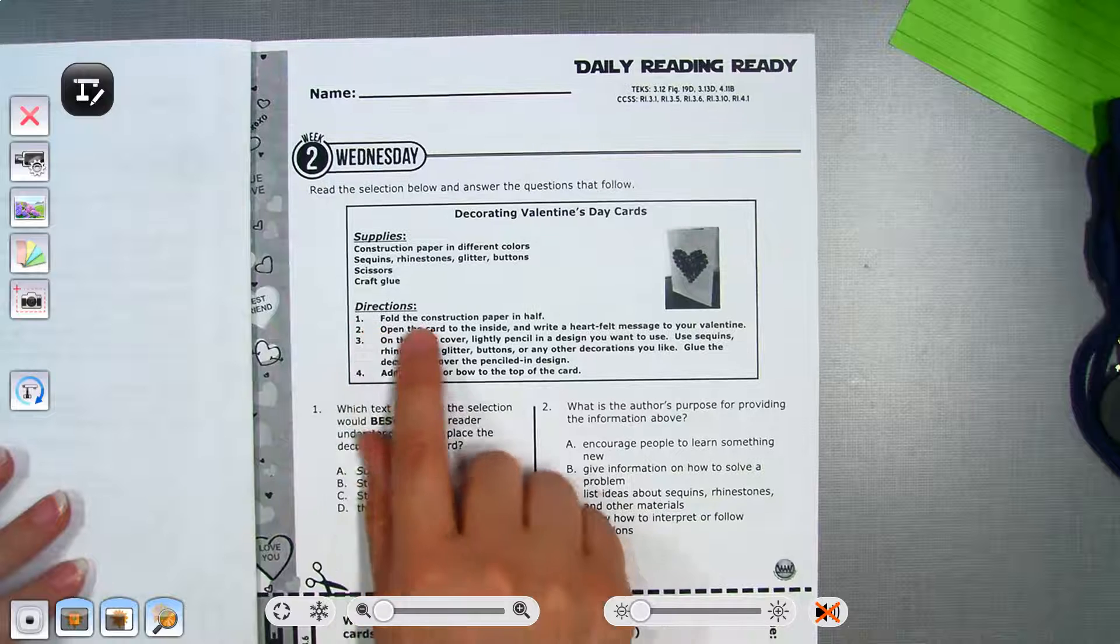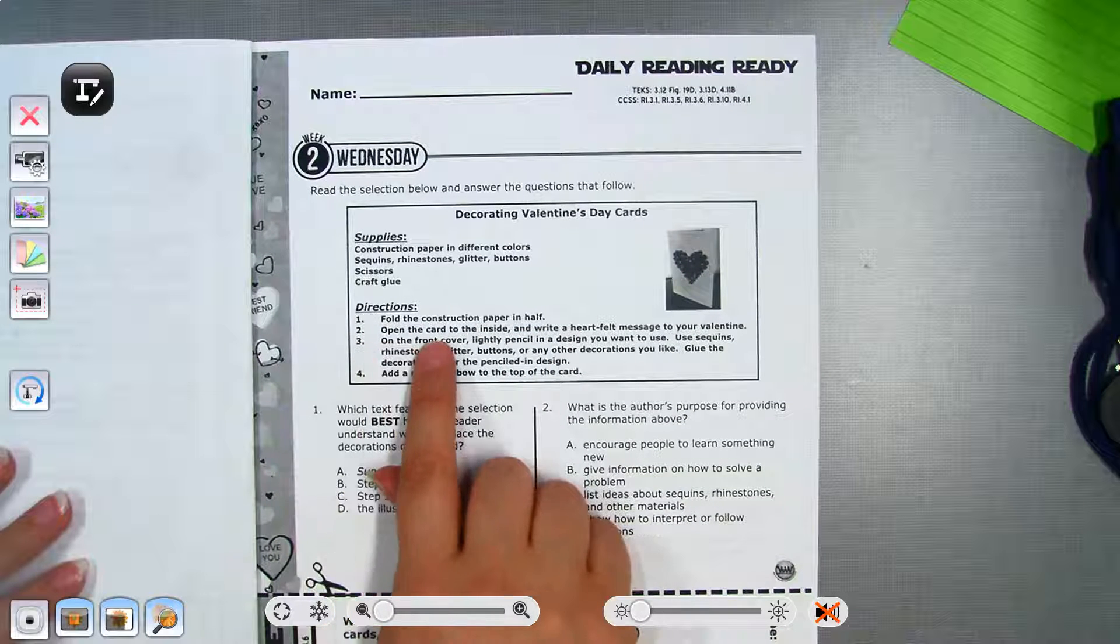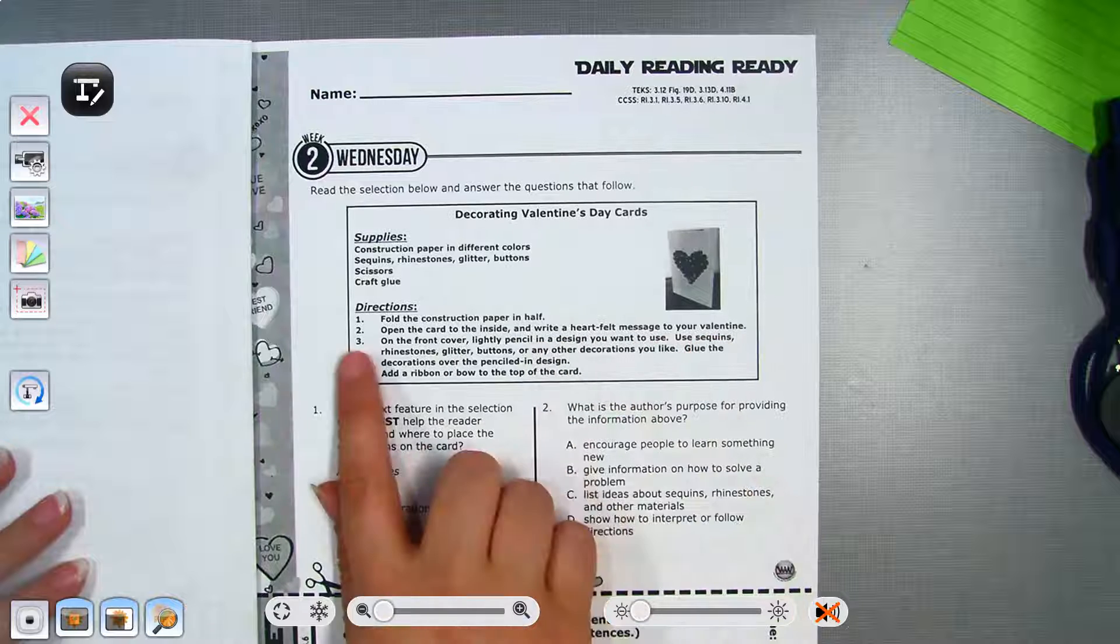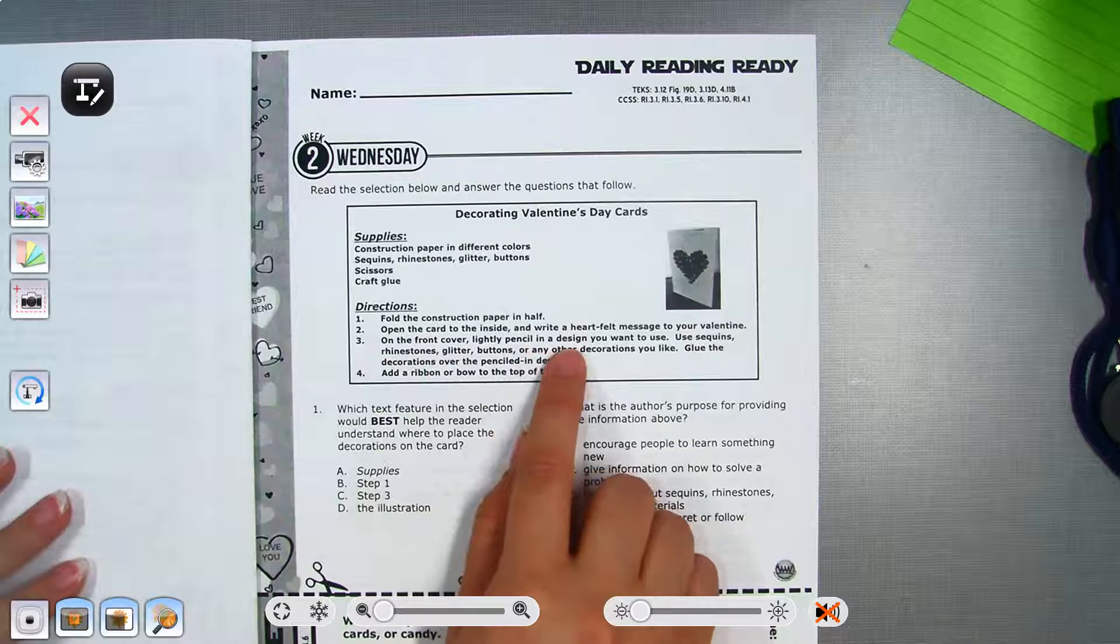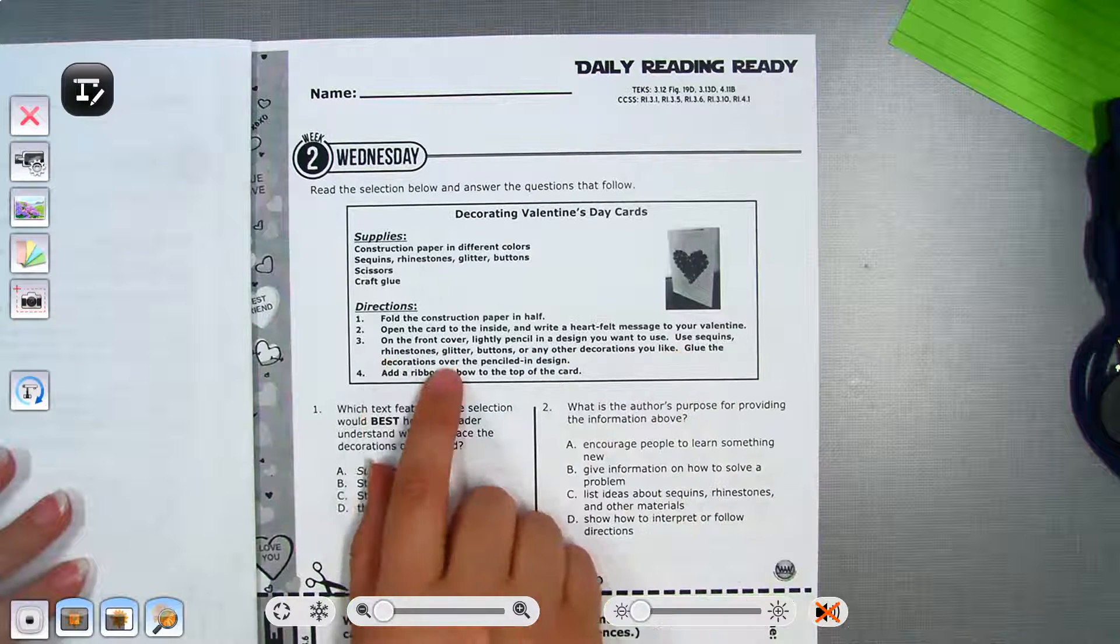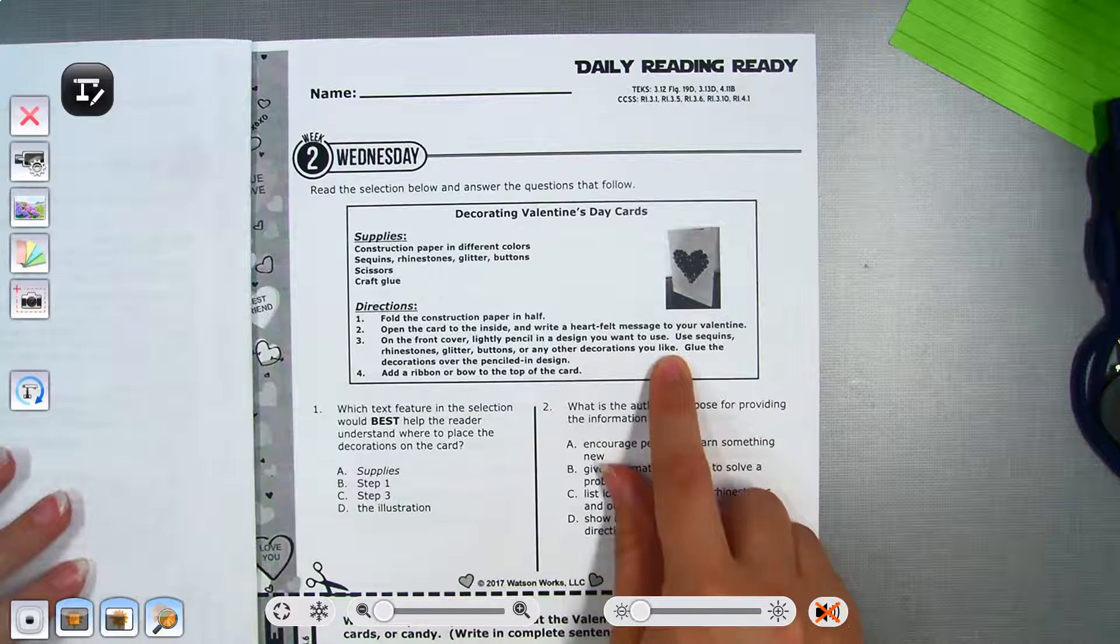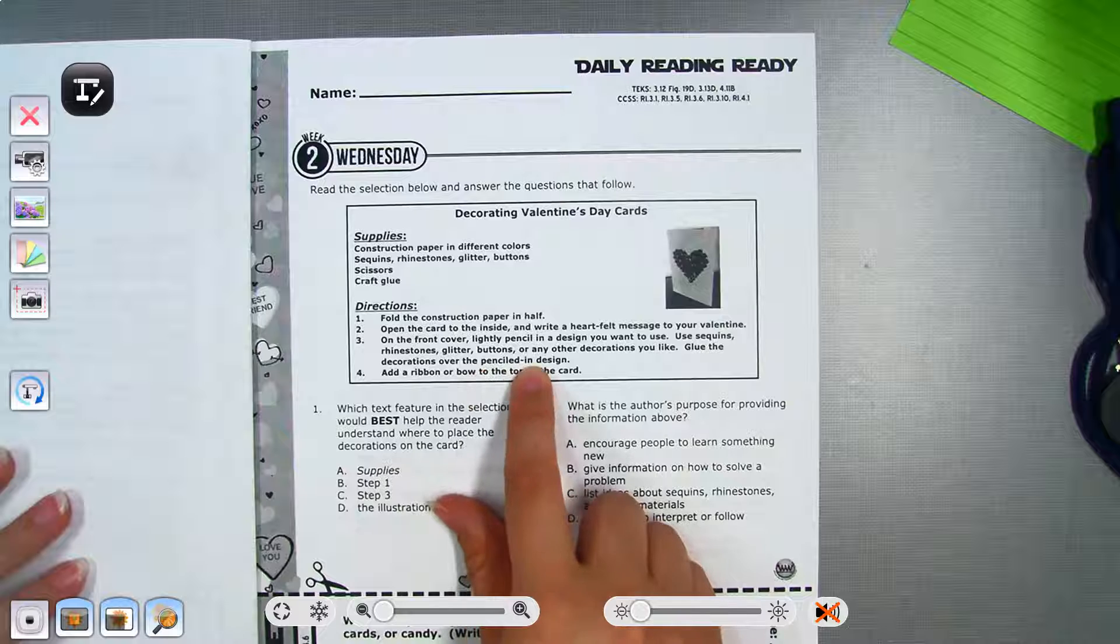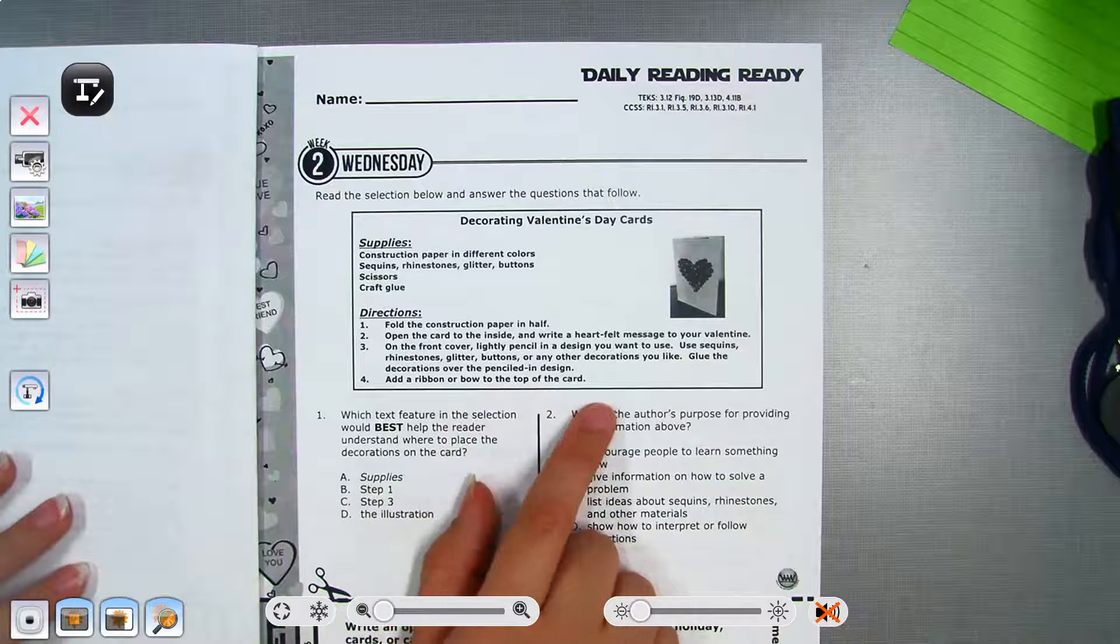Directions. Number one, fold the construction paper in half. Two, open the card to the inside and write a heartfelt message to your Valentine. Three, on the front cover, lightly pencil in a design you want to use. Use sequins, rhinestones, glitter, buttons, and any other decorations you like. Two, glue the decorations over the penciled in design. Four, add a ribbon or bow to the top of the card.